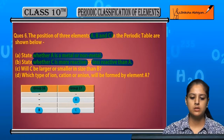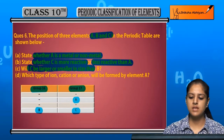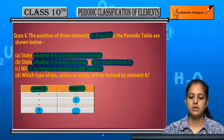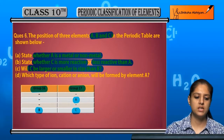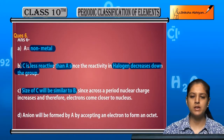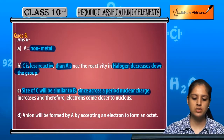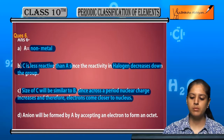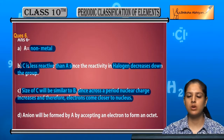Third: will C be larger or smaller in size than B? The size of C will be smaller than B, since across a period the nuclear charge increases and therefore electrons come closer to the nucleus.